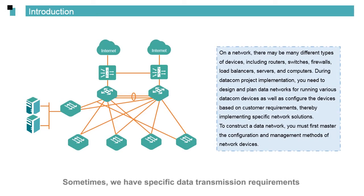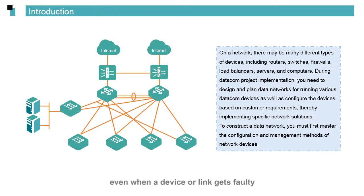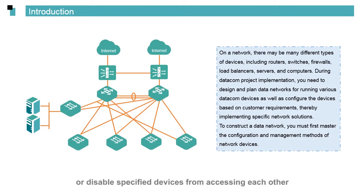Sometimes we have specific data transmission requirements. For example, we may need to specify a data transmission path, or require a reliable and robust network where data communications are not adversely affected even when a device or link gets faulty. We may also need to control which servers some devices can access, or disable specified devices from accessing each other. All these requirements can be implemented on the data network.